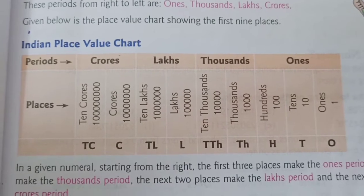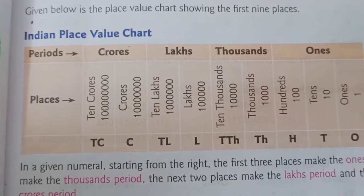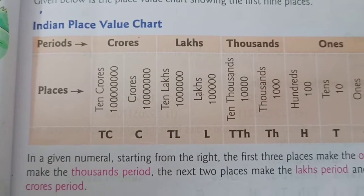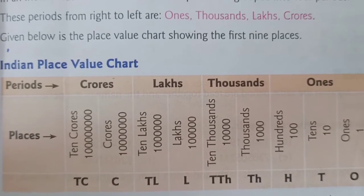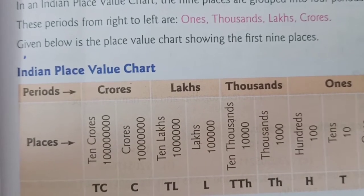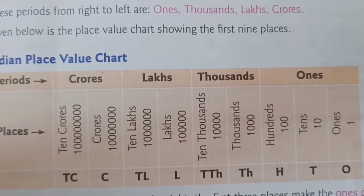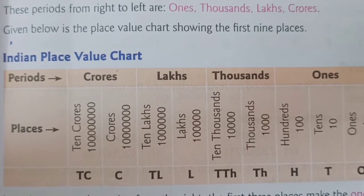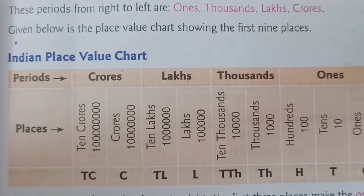So children, this is the Indian place value chart which is given in your book in lesson number 3. We see this chart from right to left. In this chart, the first 3 places make 1 period (ones), then the next 2 places make the thousands period, then the next 2 places make the lakhs period, and then the next 2 places make the crores period. So ones, tens, and hundreds come under the ones period; thousands and ten-thousands come under the thousands period; lakhs and ten-lakhs come under the lakhs period; and crores and ten-crores come under the crores period.